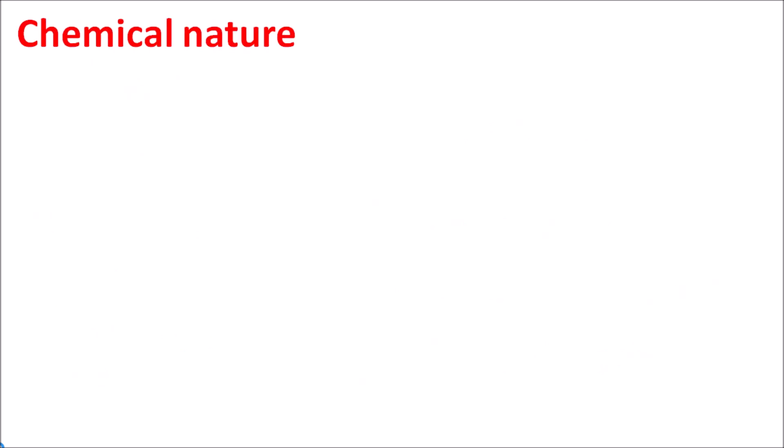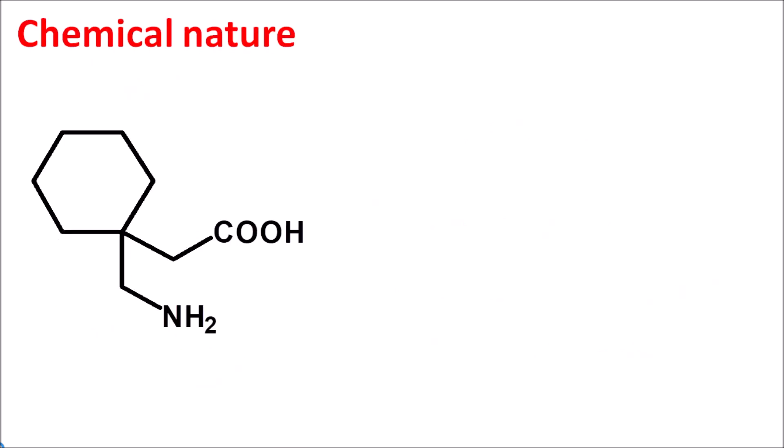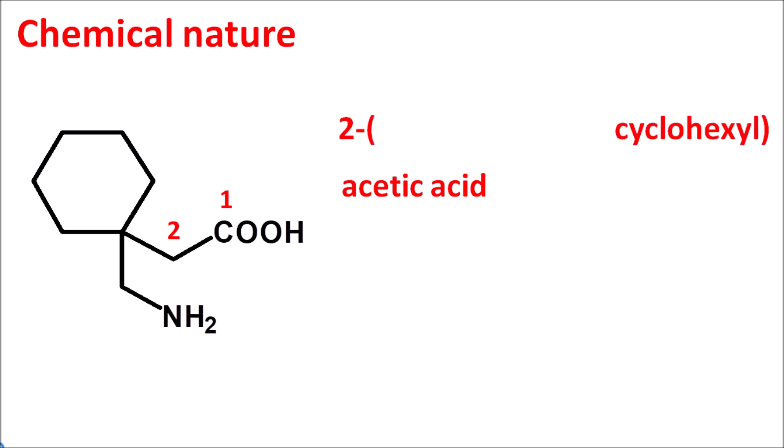The chemical structure of gabapentin is somewhat similar to GABA, which is gamma-aminobutyric acid. The principal functional group is a carboxylic acid. At the second position, it is attached with a cyclohexyl ring, giving the suffix 'acetic acid.' This cyclohexyl ring has an aminomethyl group at the first position — hence the complete IUPAC name: 2-(1-aminomethyl)cyclohexyl acetic acid.